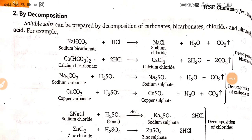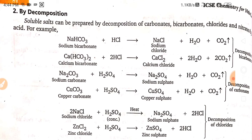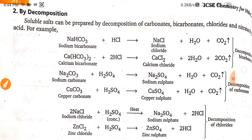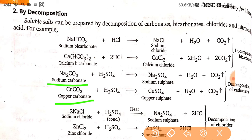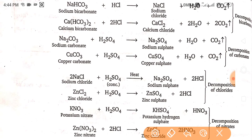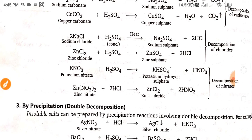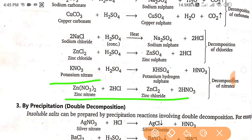The second method is by decomposition. Soluble salts can be prepared by decomposition of carbonates, bicarbonates, chlorides, and nitrates by an acid. For example, sodium bicarbonate reacting with HCl forms sodium chloride. Sodium carbonate and copper carbonate are examples of decomposition of carbonates. Decomposition of chlorides gives sodium chloride and zinc chloride, and decomposition of nitrates — potassium nitrate and zinc nitrate.